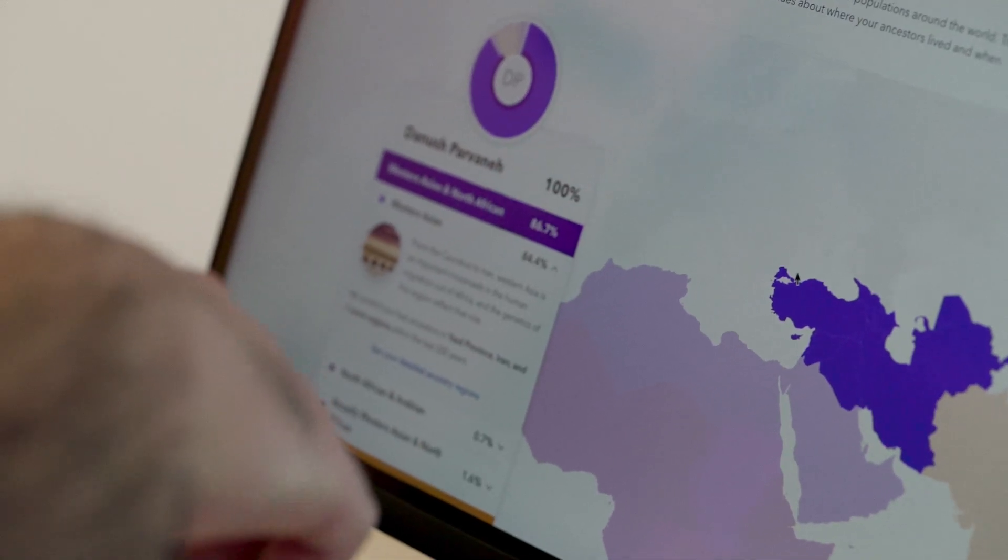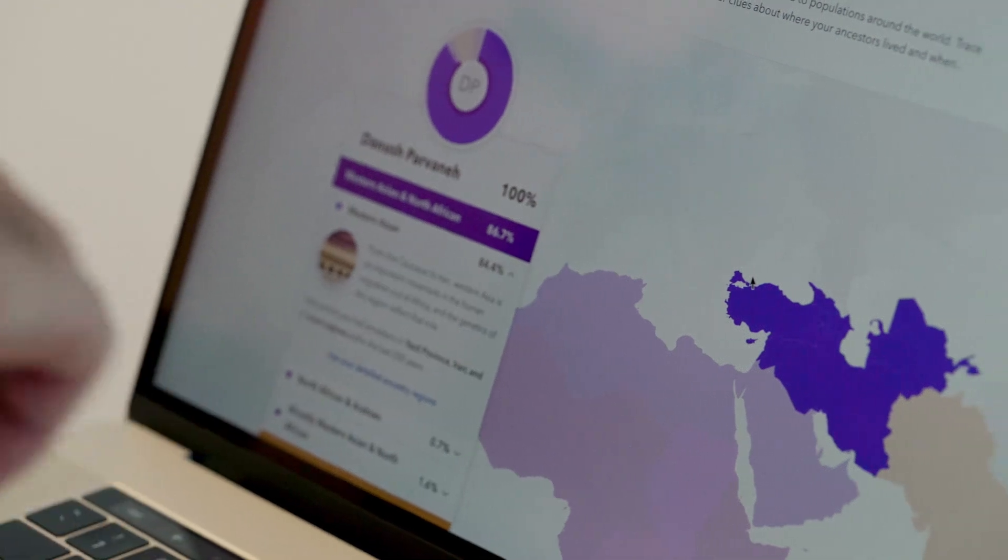I got 86.7% Western Asian, which on the map is highlighting Turkey, Iran, Iraq, that part of the world.